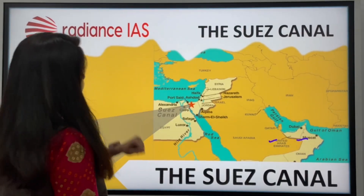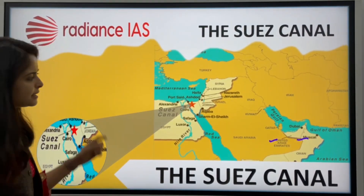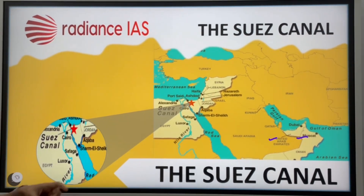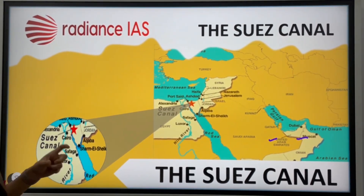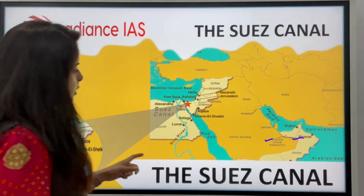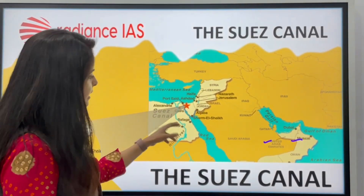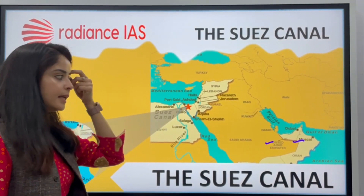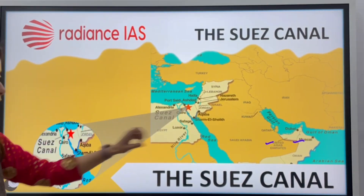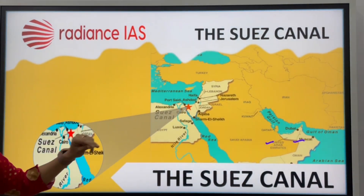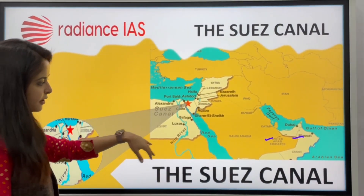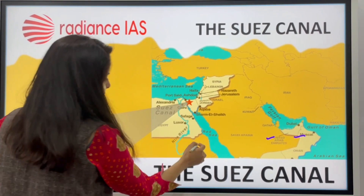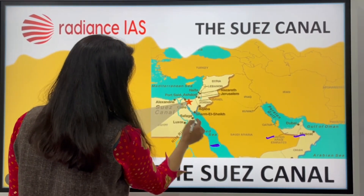Today we are looking at the Swiss Canal. The Swiss Canal is a very geopolitical water location. The Swiss Canal is located in the Middle East. This is the South African area, and here is the region which is the Red Sea.